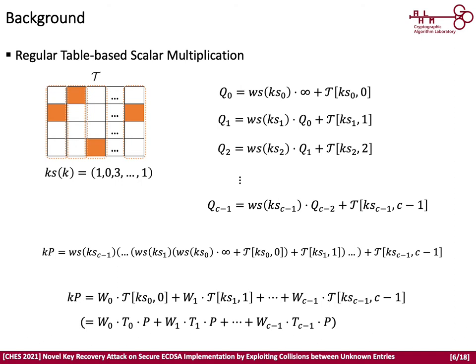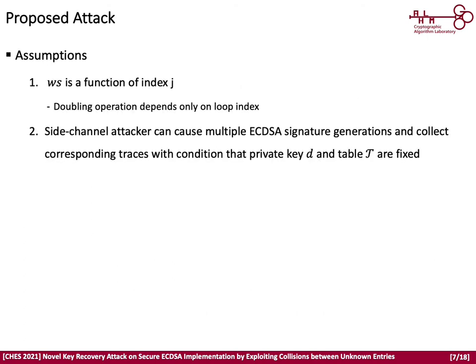Now I will explain our key recovery attack. This attack requires two assumptions. First, the doubling operation ws depends only on the loop index j. Second, the side-channel attacker can get sufficient traces on multiple ECDSA signings with a fixed private key and precomputation table. This is common in a multiple-trace attack scenario. With these two assumptions, our attack can recover the secret key by exploiting only collision characteristics between unknown entry referencings.